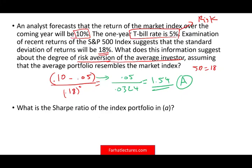Now what is the Sharpe ratio of the index portfolio? The Sharpe ratio uses the same numerator — the risk premium — but now we divide by the standard deviation, 0.18, rather than the variance. That gives us 0.05 divided by 0.18, which equals approximately 0.28 for the Sharpe ratio.